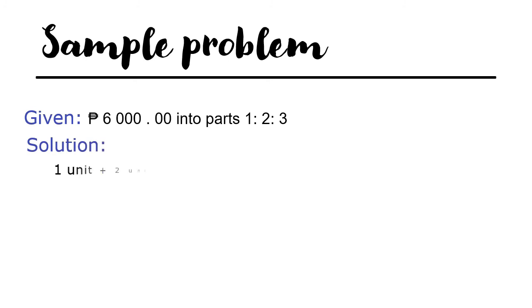Solution: 1 unit plus 2 units plus 3 units equals 6 units. 1 unit is equal to 6,000 divided by the total number of units, which is 6. 1 unit is 1,000.